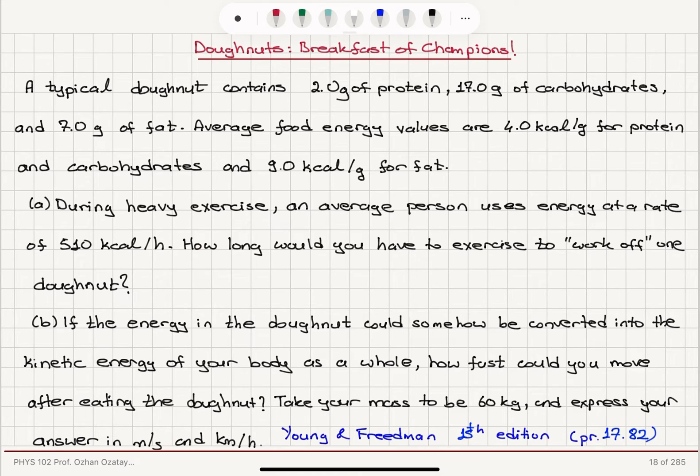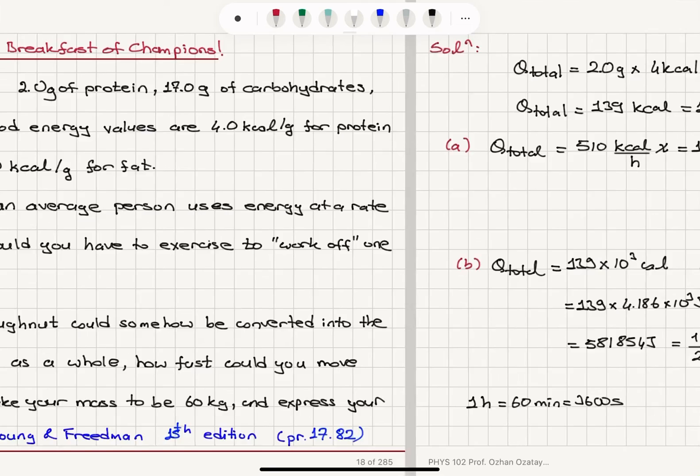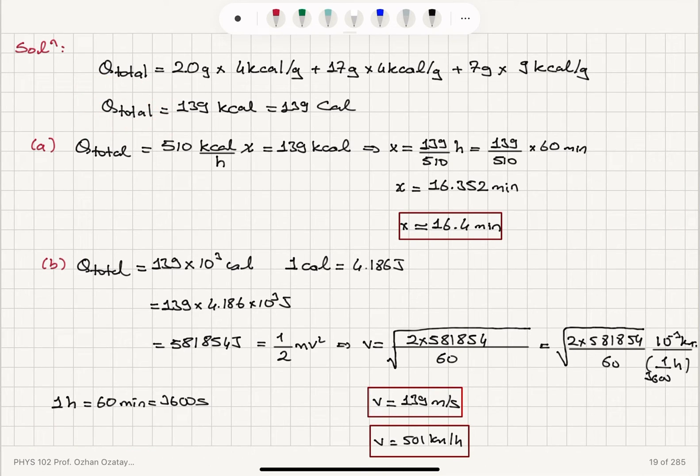So we're talking about working off a donut. Knowing that a donut contains 2 grams of protein, 17 grams carbohydrates, 7 grams fat, and calorie values per gram for each food component, we can calculate the total calorie included in a donut: 139 food calories.